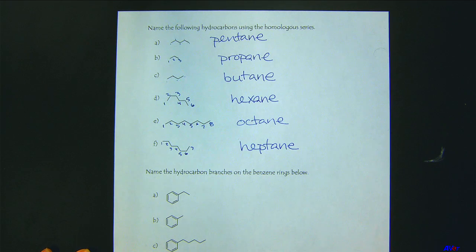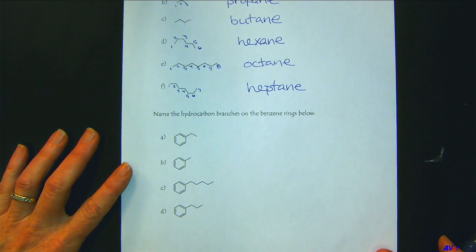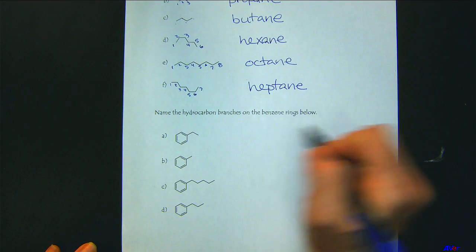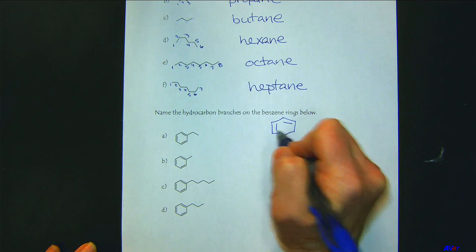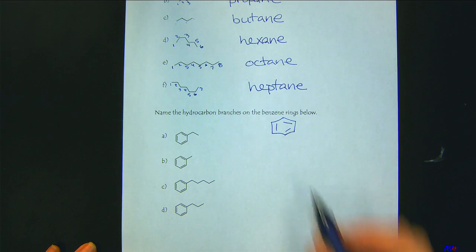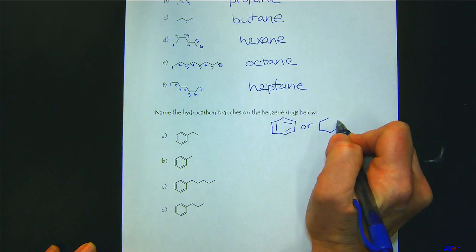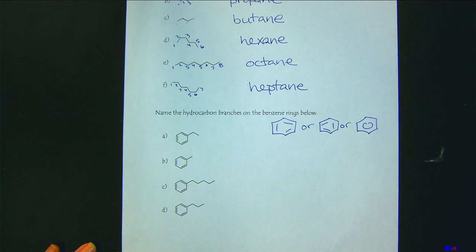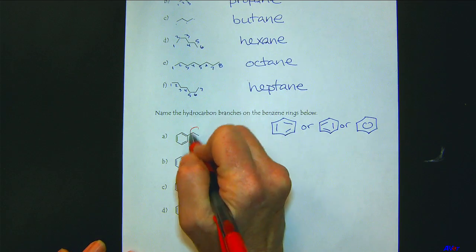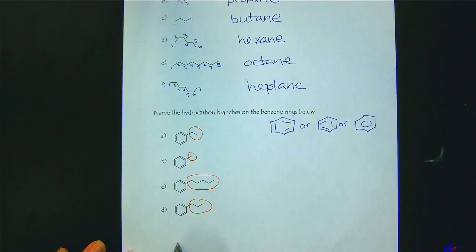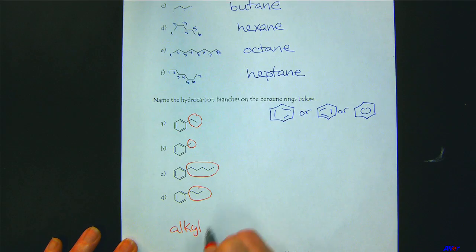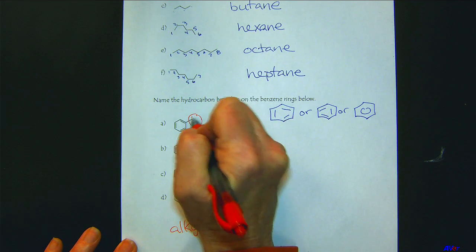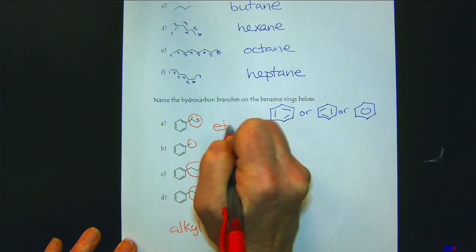Pretty straightforward. Now to practice using the homologous series as branches or substituents. I've attached all of these to benzene — a six-membered ring with alternating double bonds. We could also write it with a circle in the center. We're going to focus on these alkyl branches. There are one, two — two carbons — so we would call this ethyl. We change to the '-yl' ending.